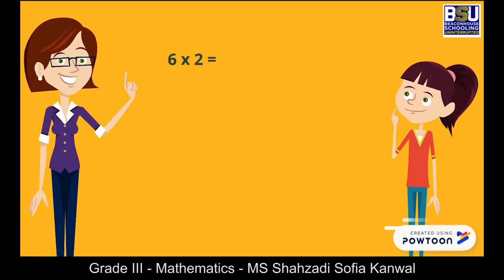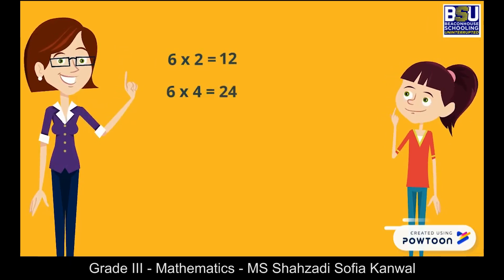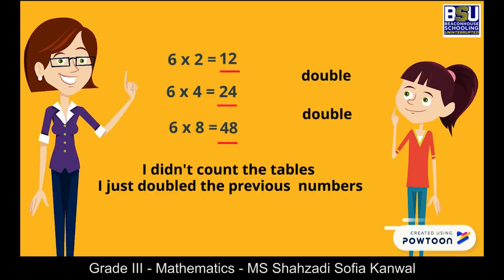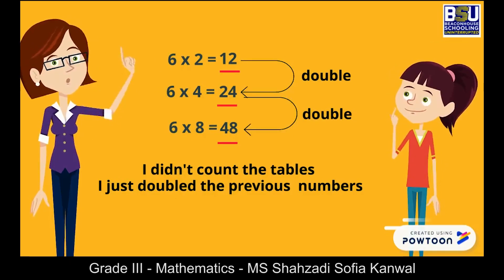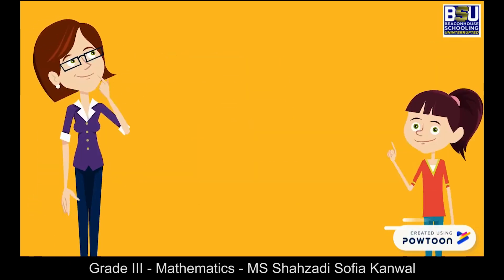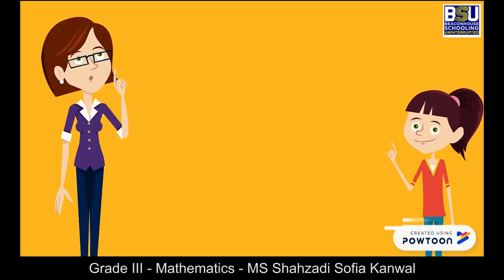Can you tell me what is six times two? Twelve. Six times four? Twenty-four. Six times eight? Forty-eight. How did you give such quick answers? I used a smart idea — I didn't count the tables, I just doubled the previous numbers. Oh, that's a great idea!